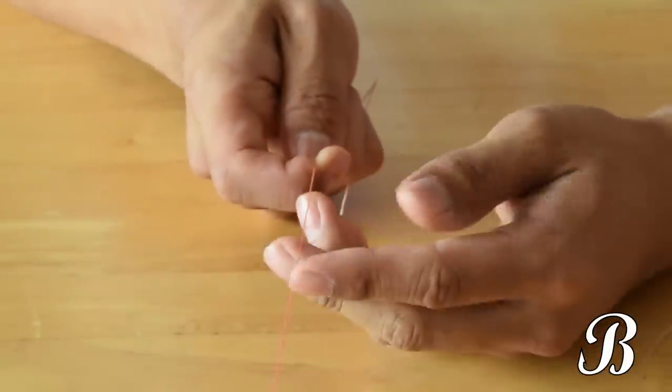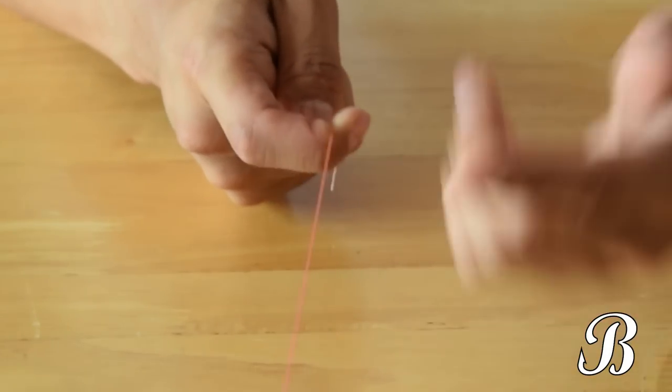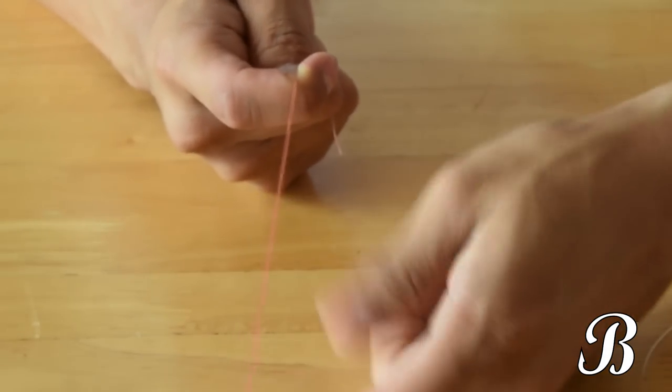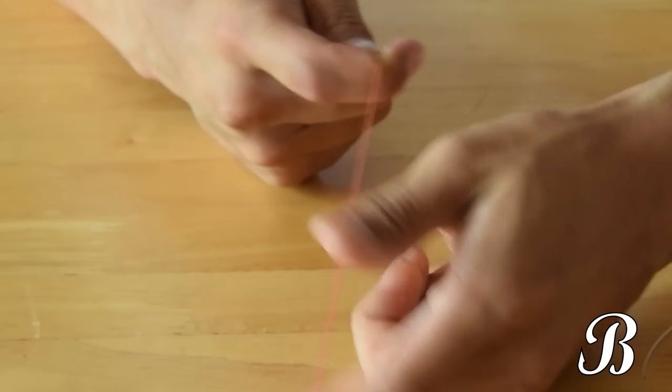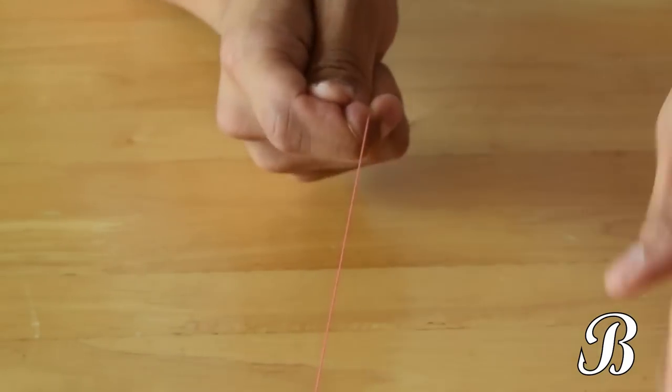To tie an FG knot, you're going to make sure that your braided line is always tight. Otherwise, the knot will fail. You're going to want to start by holding a reel down somewhere to make sure that the line is tight. Here I have the reel underneath the table under my feet to make sure the line is tight.